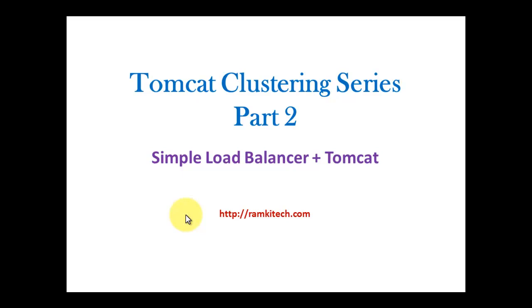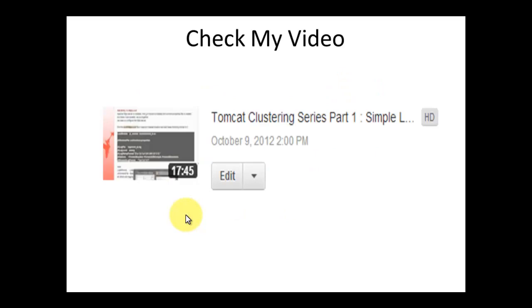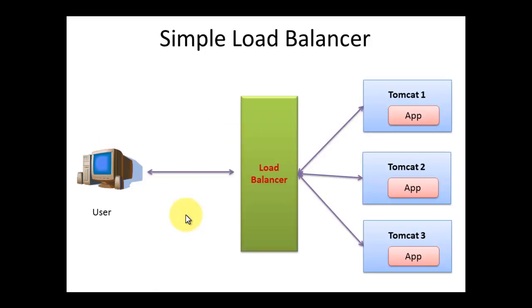Hi, this is my second screencast for Tomcat clustering. Check my first part of the Tomcat clustering, where I discuss how to set up the simple load balancer using Tomcat and Apache HTTP web server. This is a simple load balancer overall diagram. Here I put in one load balancer with Apache HTTP web server and three Tomcat instances. You can run on a dedicated server or use three instances of Tomcat. We already discussed how the load balancer distributes requests using the round robin method.